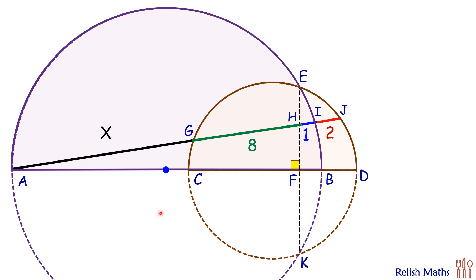Now if we apply the intersecting chord theorem in the bigger purple circle first, we have this as a chord and EK is also a chord. So here AH times HI will equal EH times HK. So AH is nothing but X plus 8, HI is 1, so we get X plus 8 times 1 equals EH times HK.